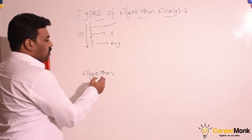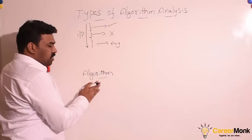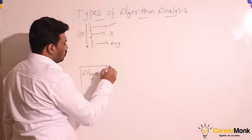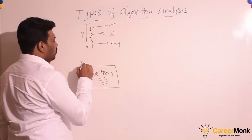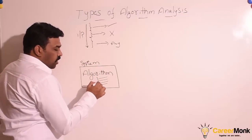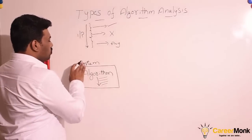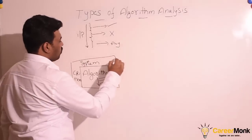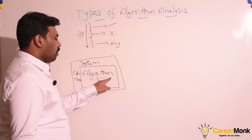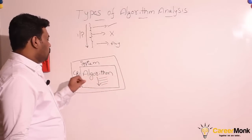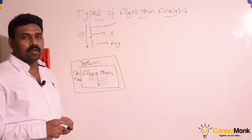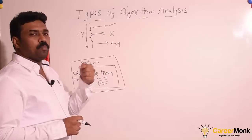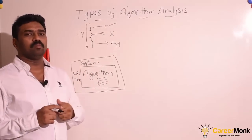To understand that, let us go back to the definition of the algorithm. An algorithm is a set of instructions for solving the given problem, and these instructions will ultimately get fed to your system to get executed. To execute these instructions, the algorithm consumes system resources like CPU and memory. From this diagram, it is clear that an algorithm can be analyzed in terms of system resources like CPU and memory. For the given input, how much time the algorithm is taking and how much space the algorithm is consuming for solving the given problem.